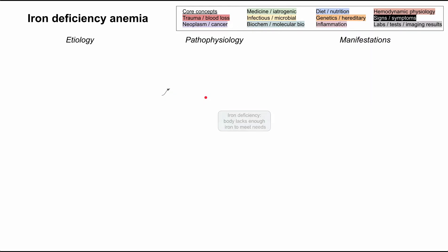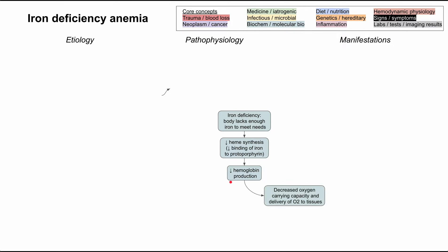The central mechanism of iron deficiency anemia is iron deficiency — your body does not have enough iron to meet its needs. When that happens, your body is not able to do heme synthesis like it normally should. You'll specifically have decreased binding of iron to protoporphyrin, which is the last step of hemoglobin production. With decreased hemoglobin production, you'll have decreased oxygen carrying capacity and decreased delivery of oxygen to the tissues.